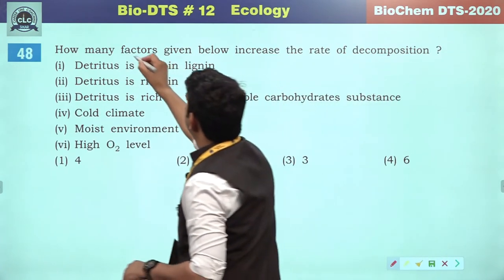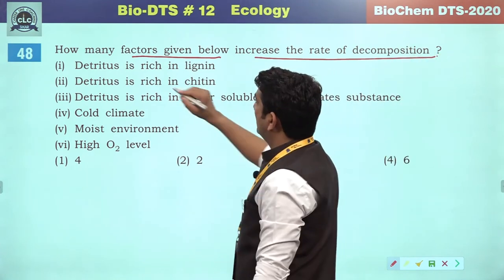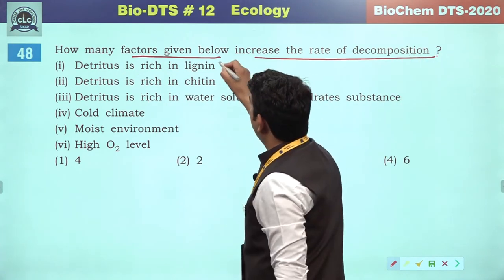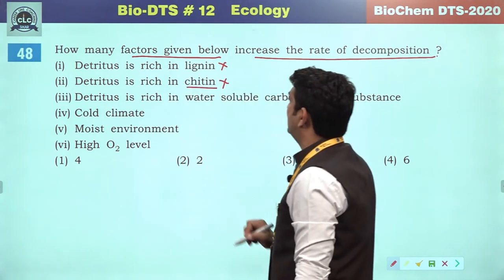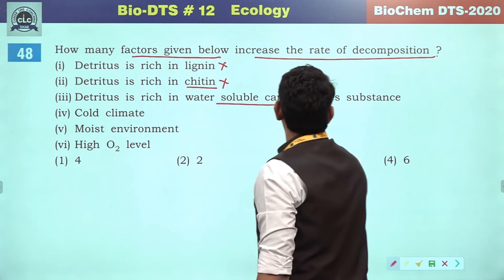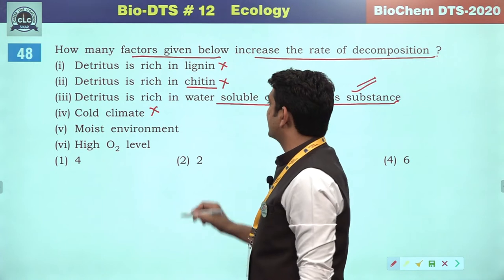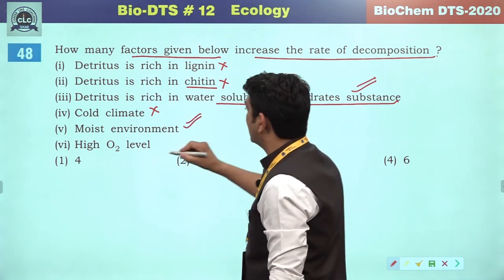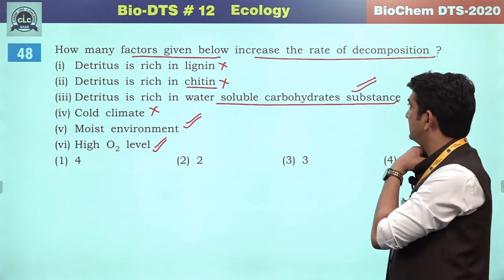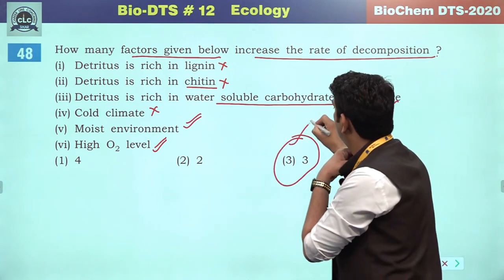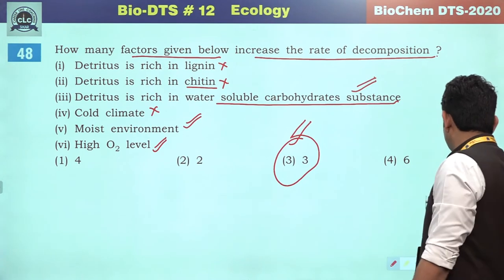How many factors given below increase the rate of decomposition? Detritus rich in lignin — definitely decreases decomposition. Detritus rich in chitin — decreases rate. Detritus rich in water-soluble carbohydrate substances — definitely increases. Moist environment and high oxygen level — increase decomposition. Cold climatic conditions decrease it. So there will be three references that increase the rate of decomposition — third will be the correct answer.